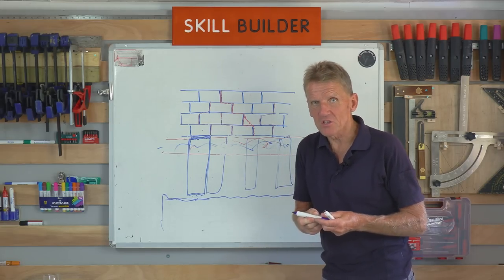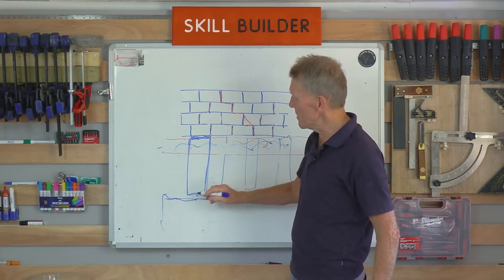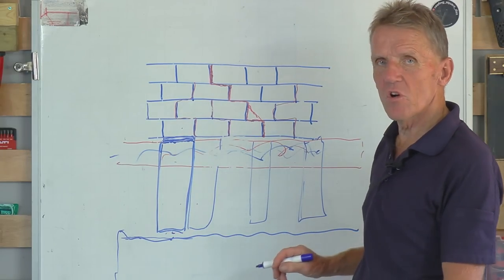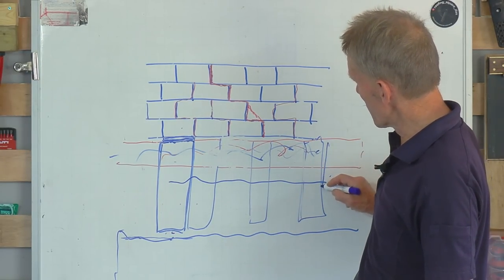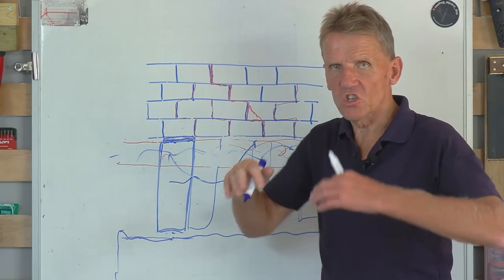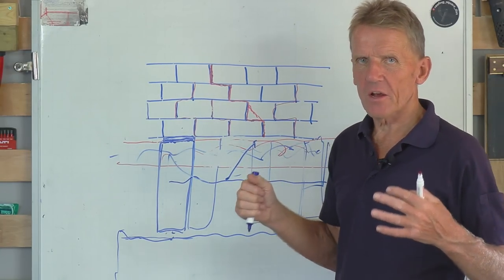You get problems with subsidence on houses which are built with concrete foundations, simply because the clay beneath them dries out, and the concrete foundation, which is probably poured in one go, just cracks across it. Just falls apart, because there's not a great deal of tensile strength in that concrete.